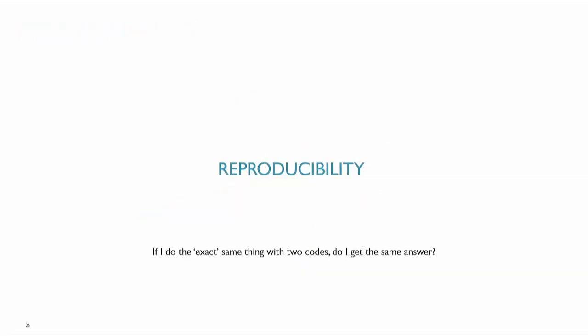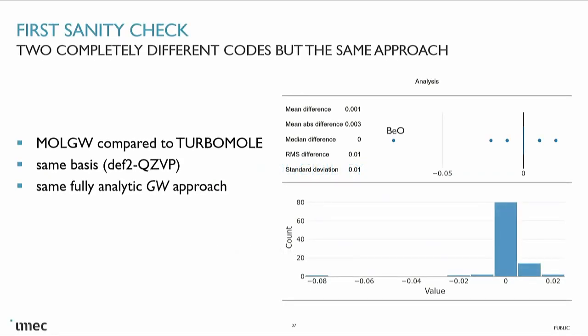The first thing to do is reproducibility — when I do the same thing with two different codes, do I get the same results? We have two codes that can do this fully analytic approach: analytic discretization of W, convolution with G in an analytic way, and then just make the big sum. You can see we get a very nice agreement — 80% of the molecules have indistinguishably the same HOMO energies. There are a few outliers, but we basically know what's happening. These are very complicated systems. My favorite system, if you want to calculate one difficult molecule, is beryllium oxide dimer — it will give you the most problems.